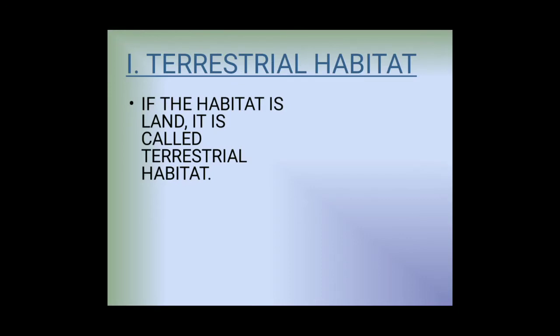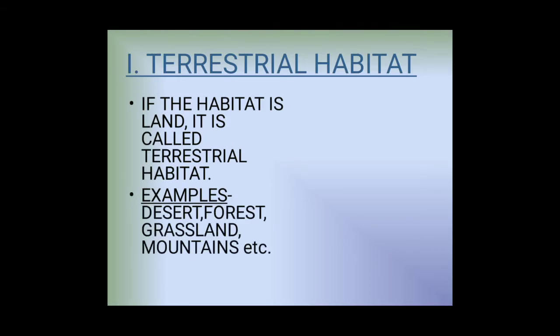What is terrestrial habitat? If a habitat is land, it is called terrestrial habitat. If we live in any kind of land - it can be a desert, a forest, a grassland, a mountain - any place other than water, then you come under the category of terrestrial habitat.